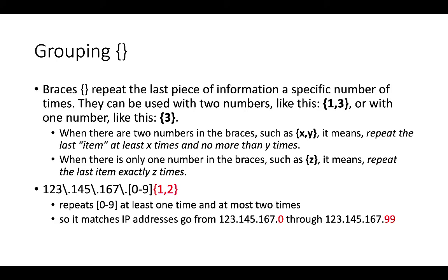Another grouping is curly brackets, or braces. They repeat the last piece of information a specific number of times. When there are two numbers in the braces such as '{x,y}', it repeats the last item at least x times and no more than y times. When there is only one number such as '{z}', it repeats exactly z times. For example, the regex for '123.145.167.' followed by '[0-9]{1,2}' matches IP addresses from 123.145.167.0 through 123.145.167.99.